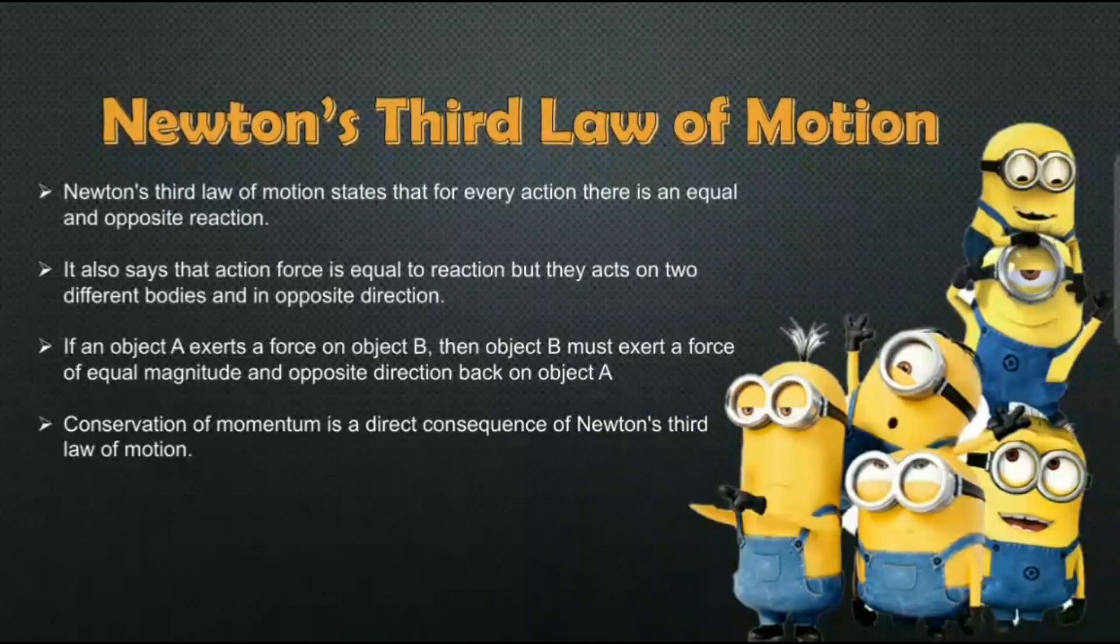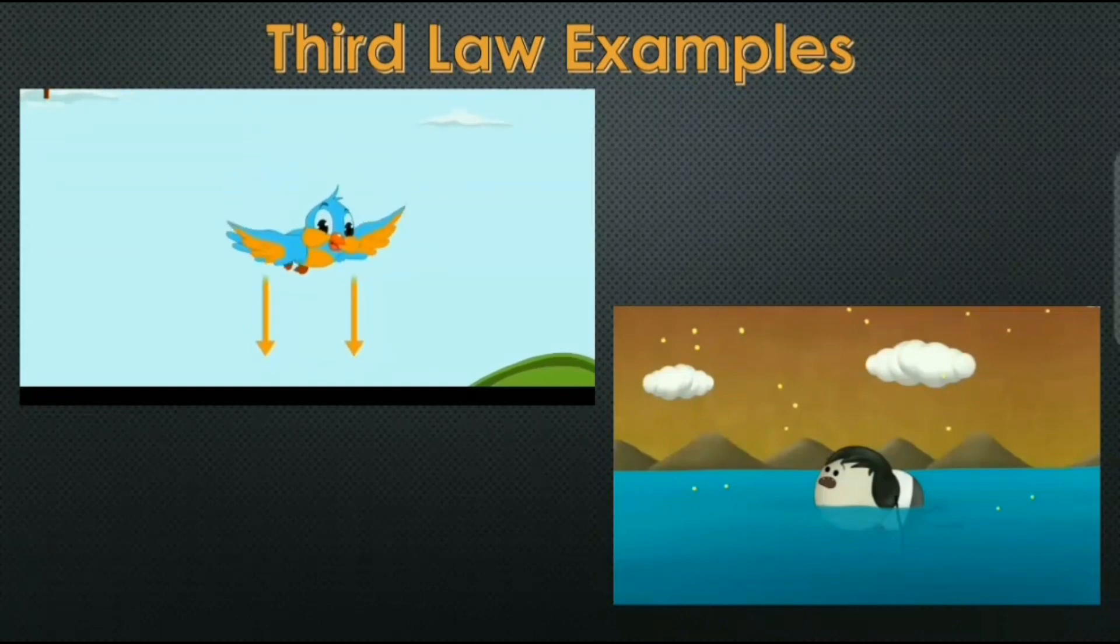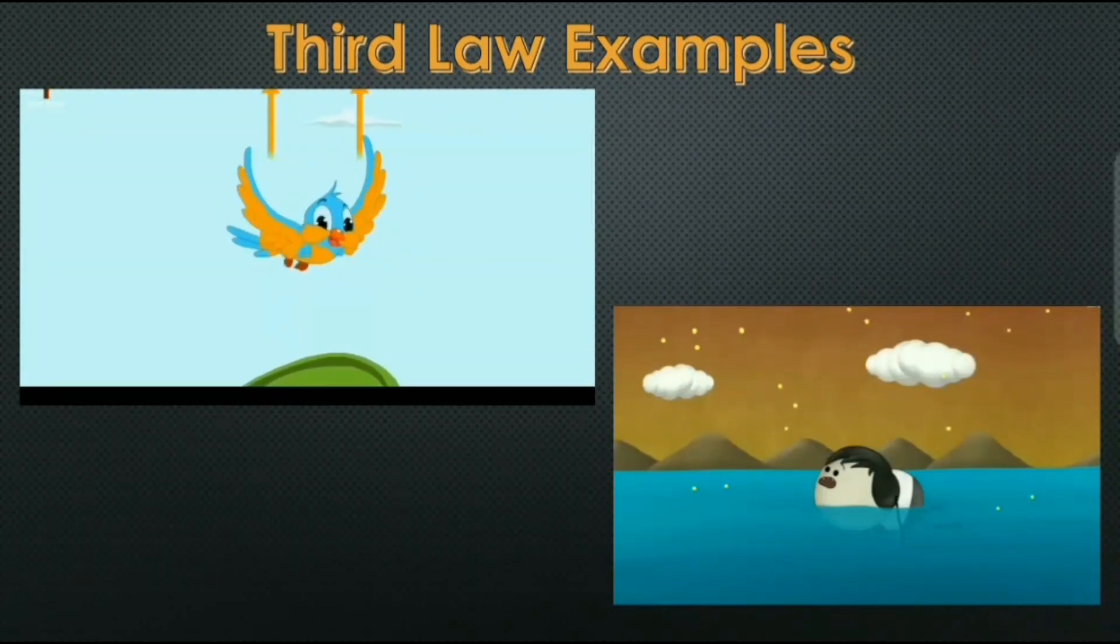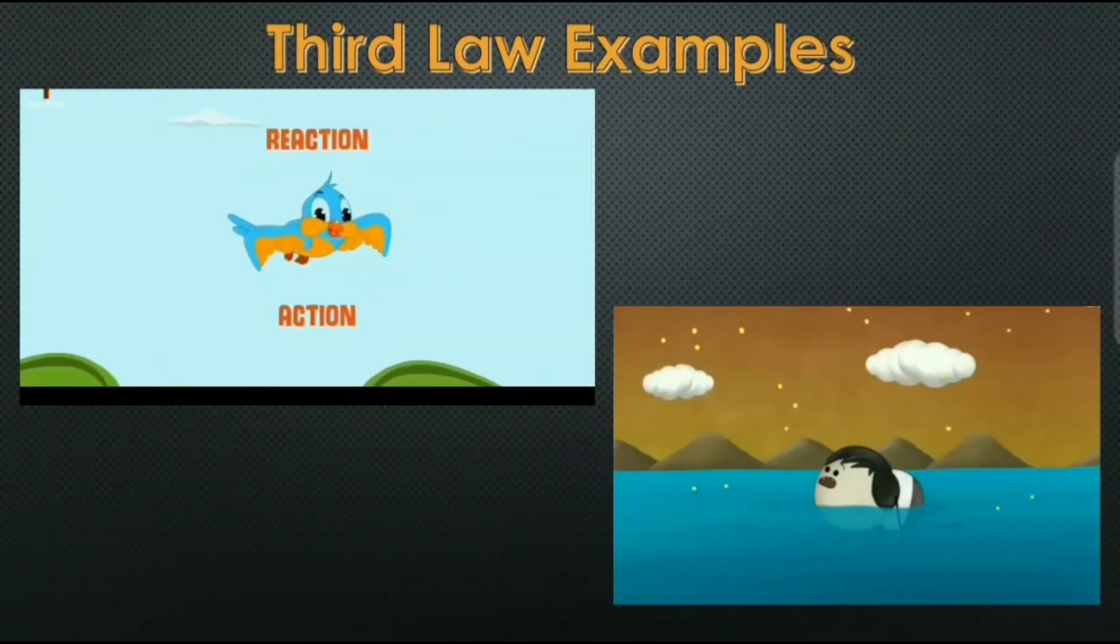Now let us see some examples for third law. Look at this cute bird flying in the air. Wings of birds exert downward force on the air. The air also exerts an equal and opposite force which pushes the bird in an upward direction. This action and reaction helps the bird flying in the air.